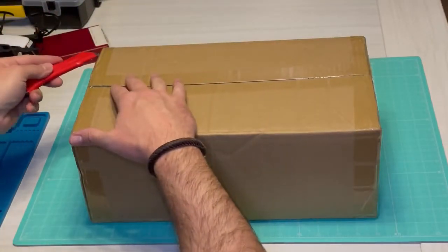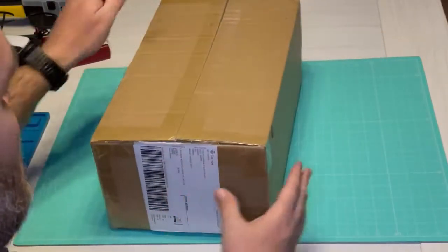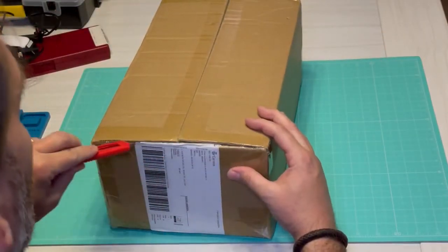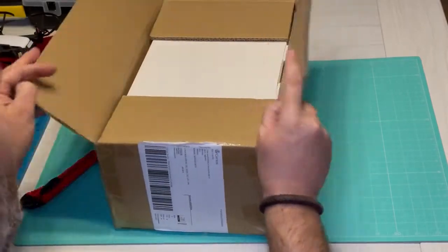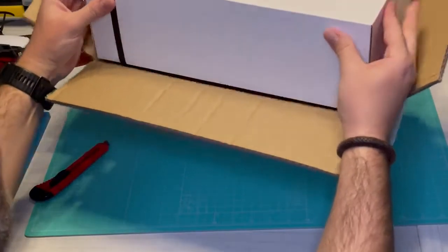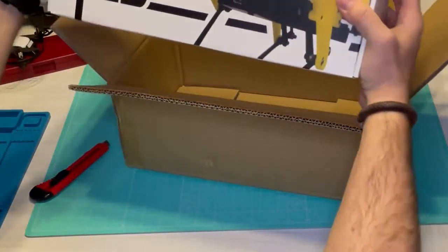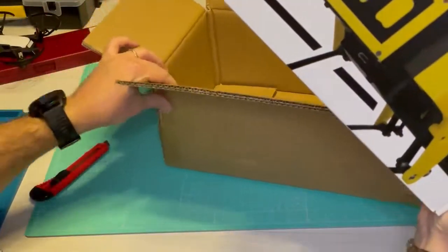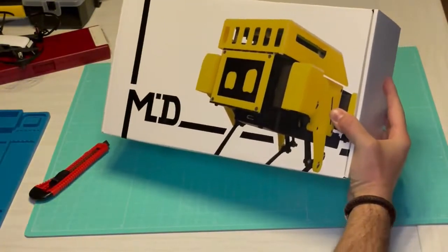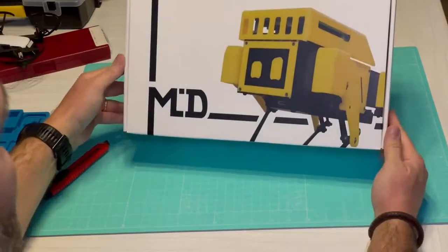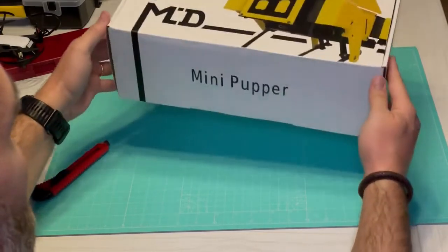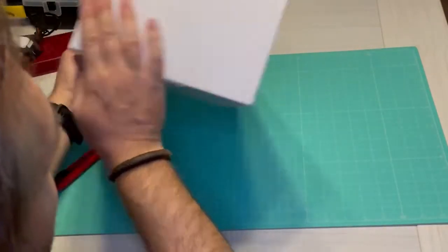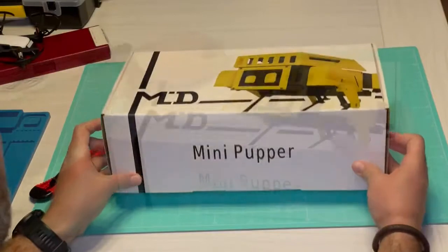Let's see what we get inside the package. There we go. It looks like it's upside down, nothing is there. Beautiful package for my Mini Pupper 4-legged robot. Let's see what's inside.